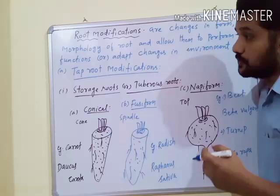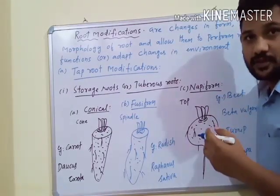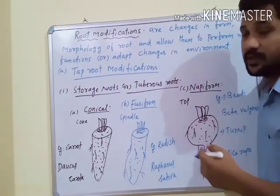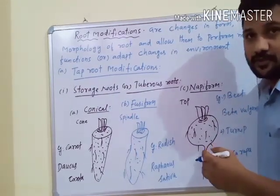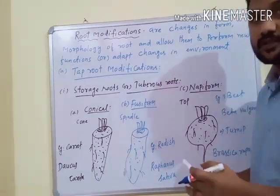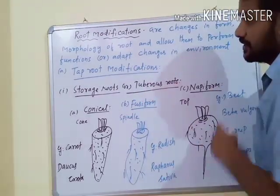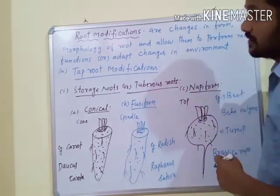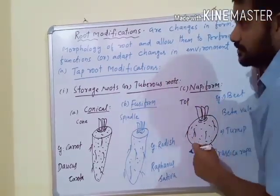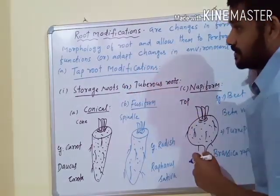Already I told you Root Systems are three types: Tap Root System, Fibrous Root System, and Adventitious Root System. All three types of Root Systems get modified to perform various new functions according to their environment. We will start with Tap Root Modifications.